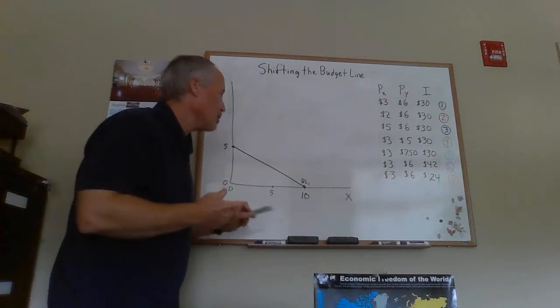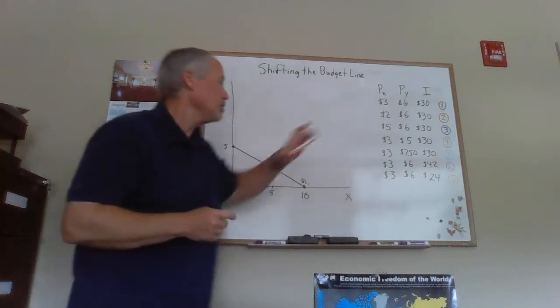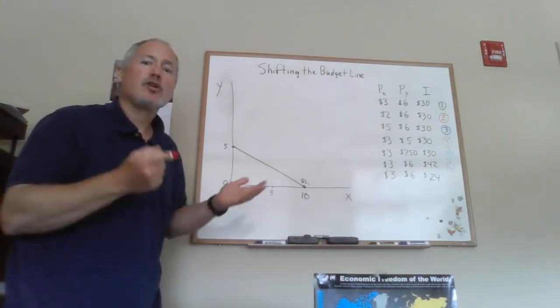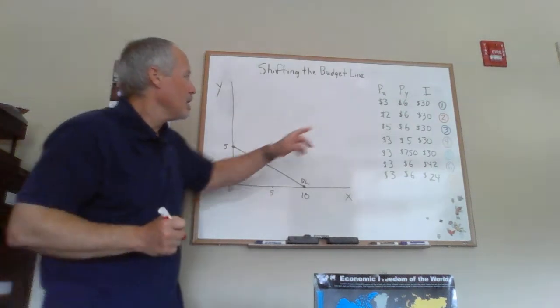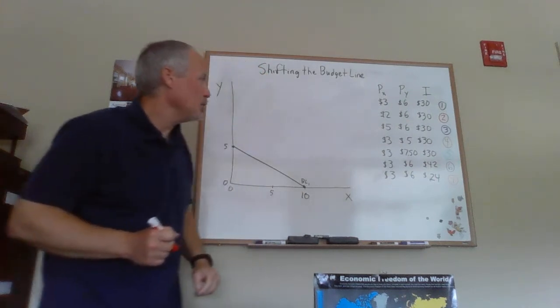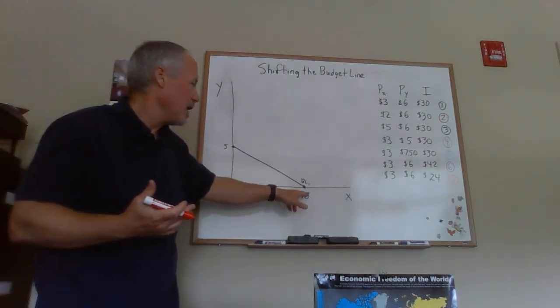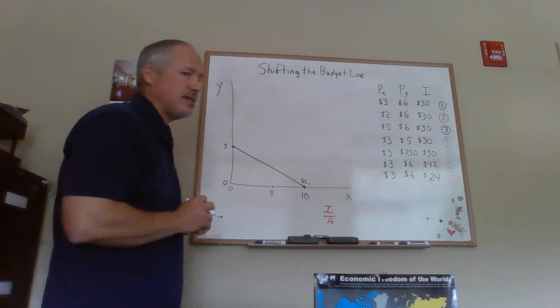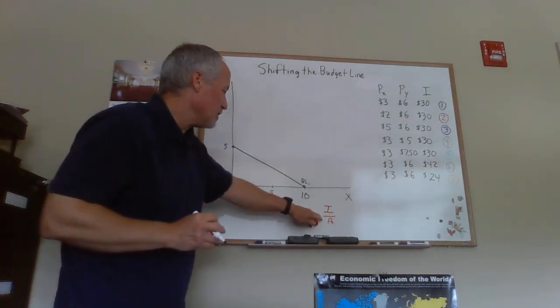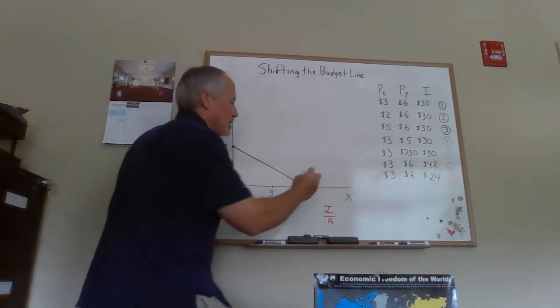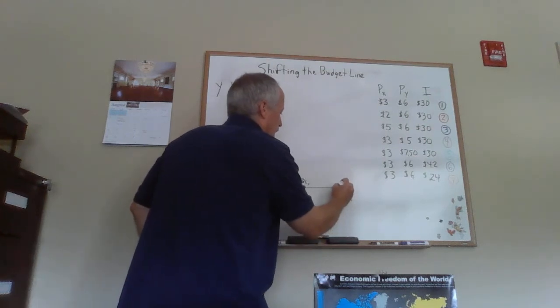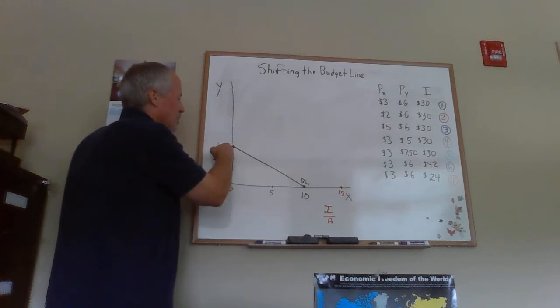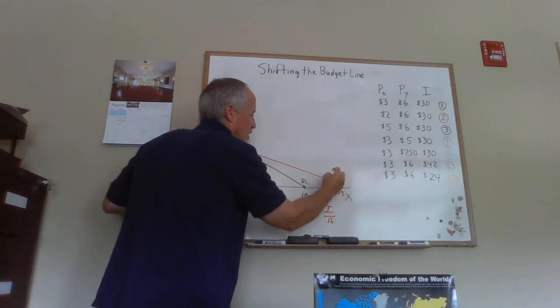And then what happens is, we're going to change the price of X to $2. This will show what happens when the price of X falls. If you're a consumer and the price of a good that you buy falls, you're better off. You can buy more X. So to figure this out, 30 divided by 2 is 15. Before, we had 10 because 30 was divided by 3. As the price of X falls, since the X axis intercept is I divided by the price of X, as you have a smaller price of X, this ratio gets bigger. In this case, it goes from 10 to 15. For the Y axis intercept, the price of Y didn't change, income didn't change, so the budget line is not going to move there. I'll draw this in here and that's BL2.